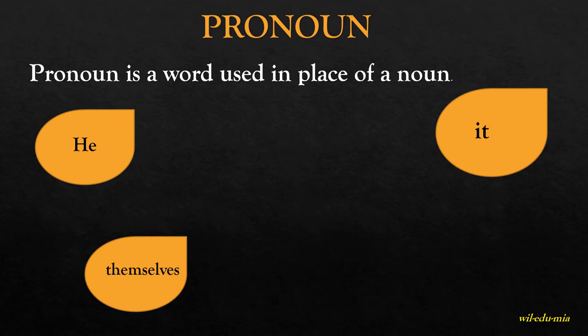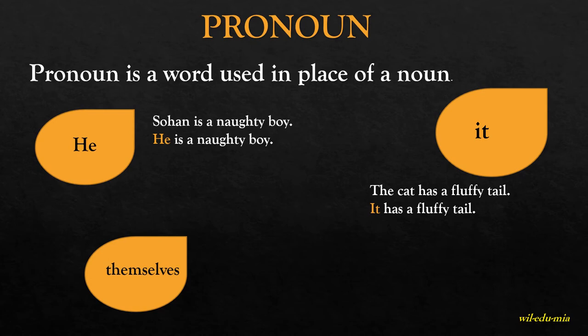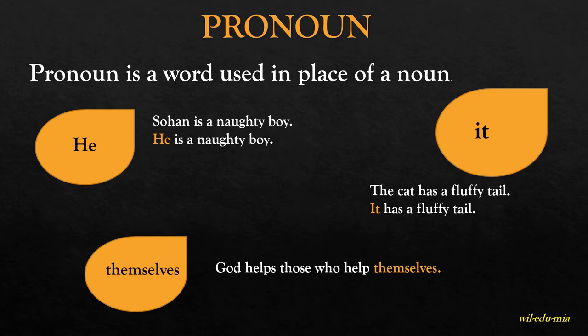Pronoun. A pronoun is a word used in place of a noun. For example, 'Han is a naughty boy' — han is a noun, so instead we use 'he,' which is a pronoun: 'He is a naughty boy.' 'The cat has a fluffy tail' — cat is a noun, so we use 'it': 'It has a fluffy tail.' 'God helps those who help themselves' — themselves is also a pronoun.